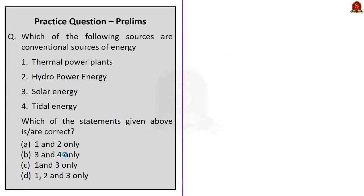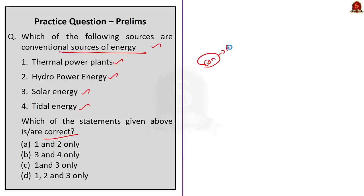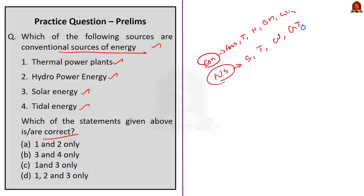The fifth question is regarding conventional sources of energy: 'Which of the following are conventional sources of energy? Thermal power plants, hydroelectric power plants, solar energy, and tidal energy.' Conventional sources of energy include fossil fuels, thermal power plants, hydropower plants, biomass, and wind energy. Non-conventional sources include solar energy, tidal energy, wave energy, ocean thermal energy, geothermal energy, and nuclear energy. So the correct answer is option A: one and two only, because only thermal power plants and hydropower plants are conventional sources of energy, while solar energy and tidal energy are non-conventional.